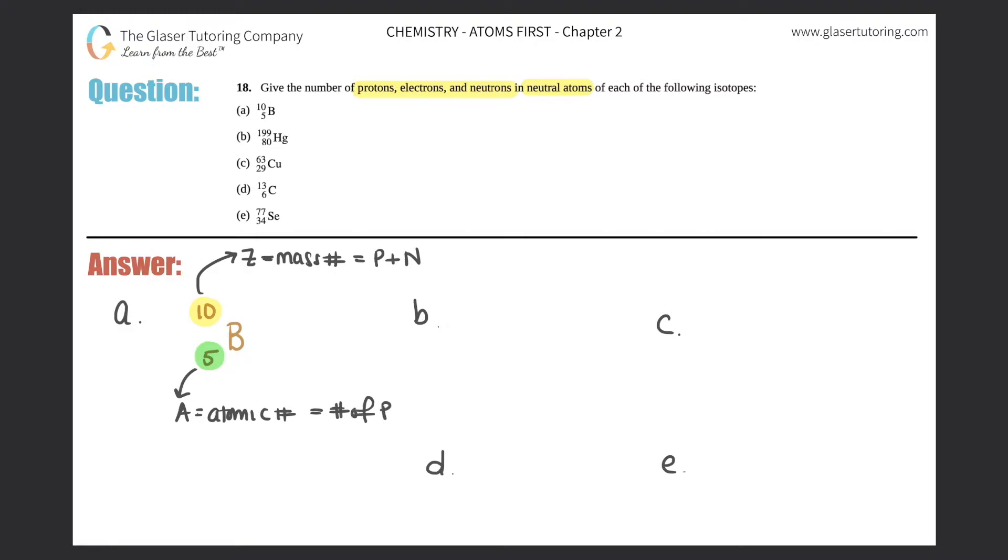And that is just the number of protons. So for here, if I just list out P, what do they want? Protons, electrons, and neutrons. Protons are always going to be the bottom left-hand lower number, the A number, the atomic number. It's always equal to the number of protons. So for this, it would be five.